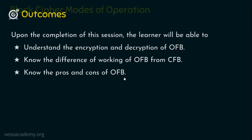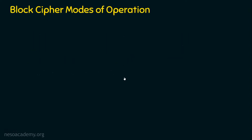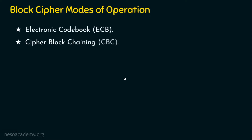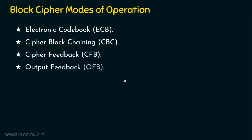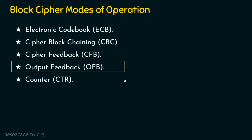We know there are basically five block cipher modes of operation. Number one: the Electronic Code Book, ECB. Number two: the Cipher Block Chaining, CBC. Number three: the Cipher Feedback Mode, CFB. Number four: the Output Feedback Mode, OFB. And number five: the Counter Mode. We are going to see about the Output Feedback Mode in this presentation.